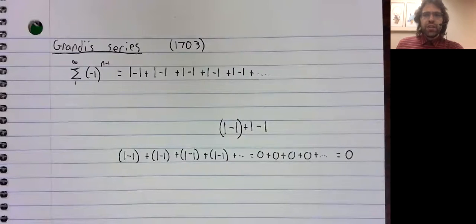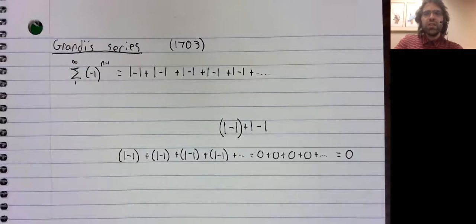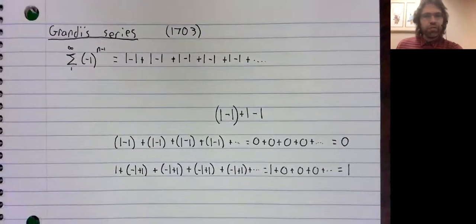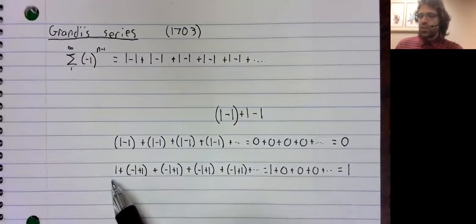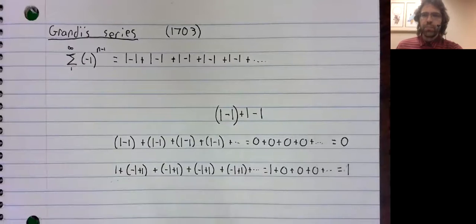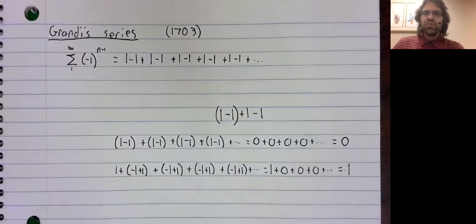Except let's now put parentheses in somewhere else. Putting parentheses in different places turns this sum into one. So obviously something is going wrong here. A sum cannot equal both zero and one.